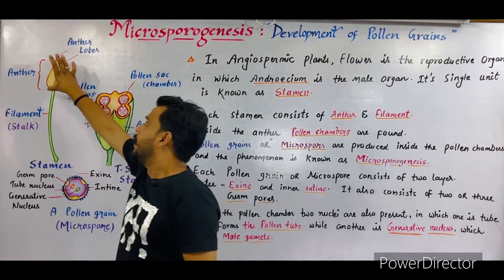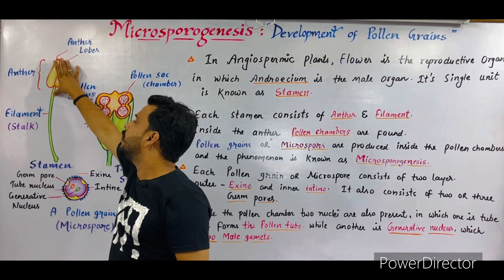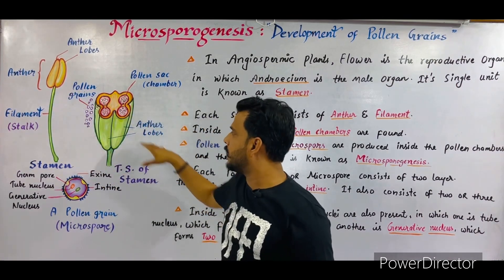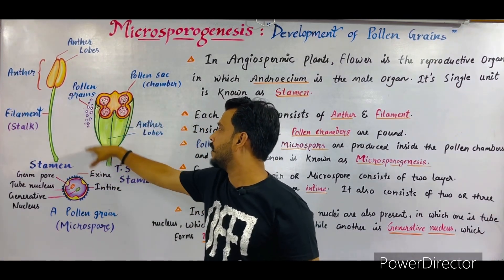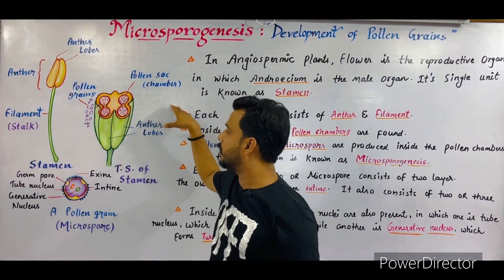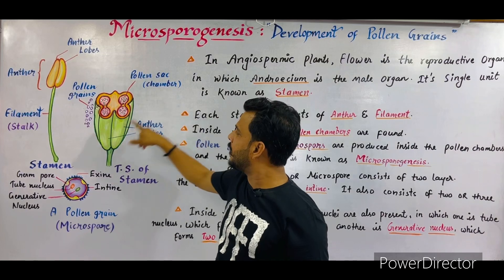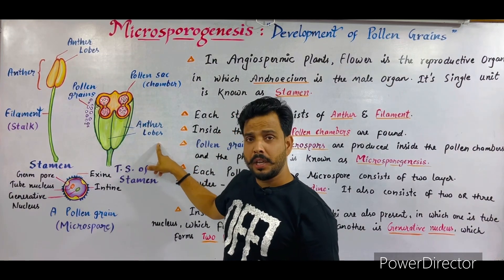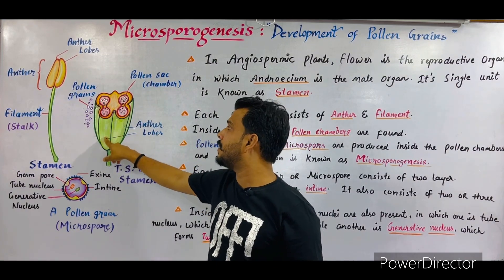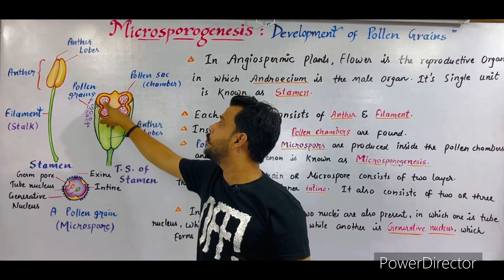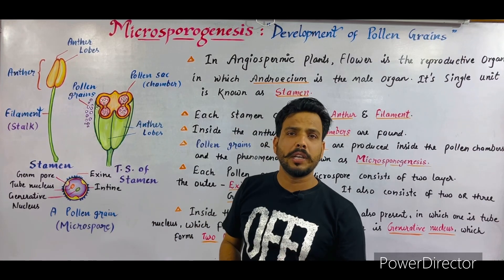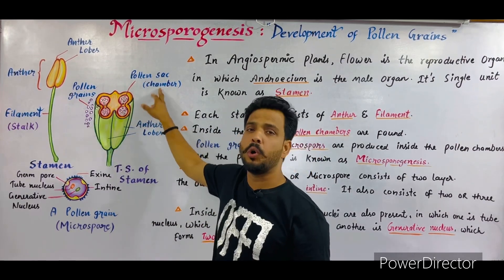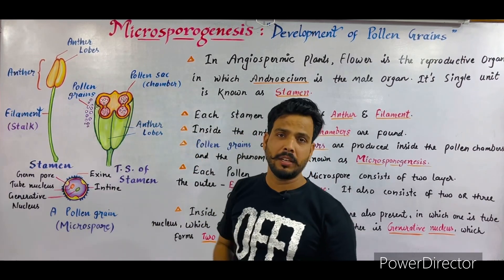If you see the TS of the anther, this diagram is a TS of the anther. You can see there are two anther lobes, and inside these anther lobes four chambers are present, which are termed the pollen chambers or pollen sacs.